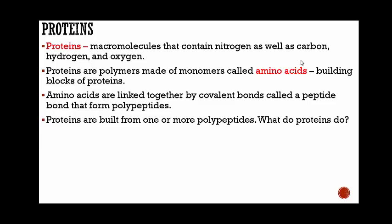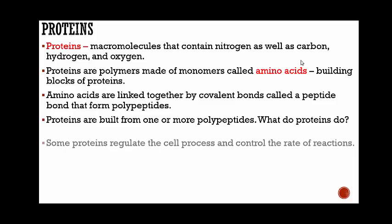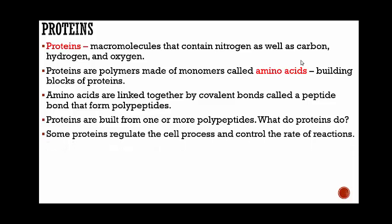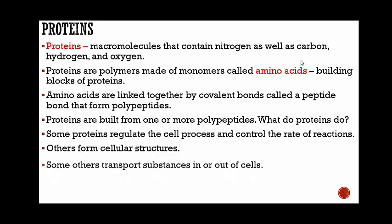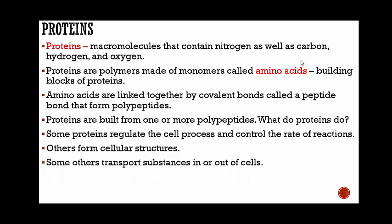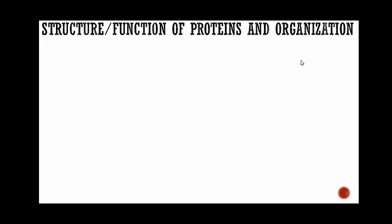Proteins are built from one or more polypeptides. What do proteins do? Some proteins regulate cell processes and control the rate of reactions; others form cellular structures; some transport substances in or out of cells; and others even help fight disease. Proteins have more than just one role — a lot of people think about building muscle, but protein does a lot more than that.